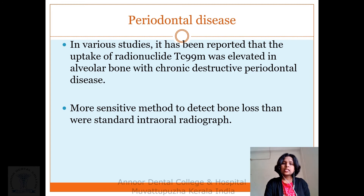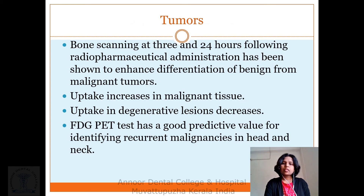Periodontal disease: various studies have reported that the uptake of technetium-99m was elevated in alveolar bone with chronic obstructive periodontal disease. It is a more sensitive method to detect such changes. For tumors, bone scanning at 3 and 24 hours following radiopharmaceutical administration has been shown to enhance differentiation of benign from malignant tumors. Uptake increases in malignant tissues. FDG PET has got a good predictive value.